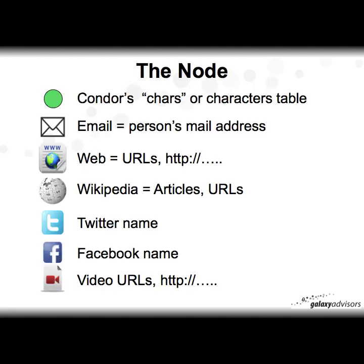From Condor's point of view, that node is represented in the chars or characters table if you use Navicat. For email, a node is a person's email address; for web, you're looking at a URL; Wikipedia could be an article or URL; Twitter, it's your Twitter name; Facebook, your Facebook name; and for video searching, it could be a URL or HTTP. These are all basically nodes that Condor uses across these multiple possible resources.